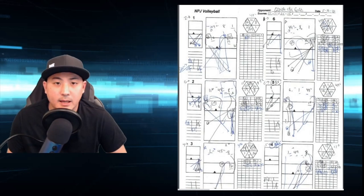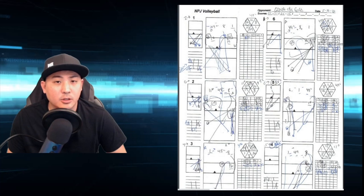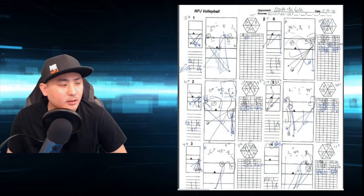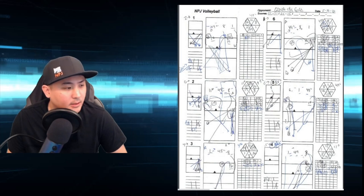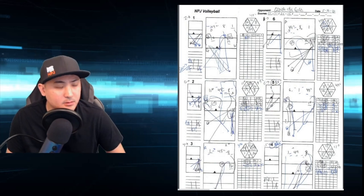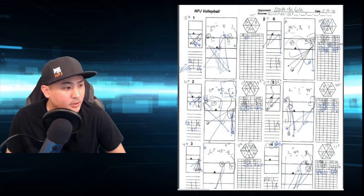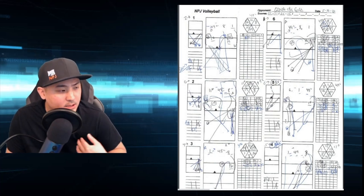Now for the quick and easy method I like to use to determine how to get the matchups that we want, we're going to take a look at the shot chart that I use when scouting opponents. In this example, you can see that I have each of the six rotations all written out, rotations one through six. On my sheet, I like to run them counterclockwise.